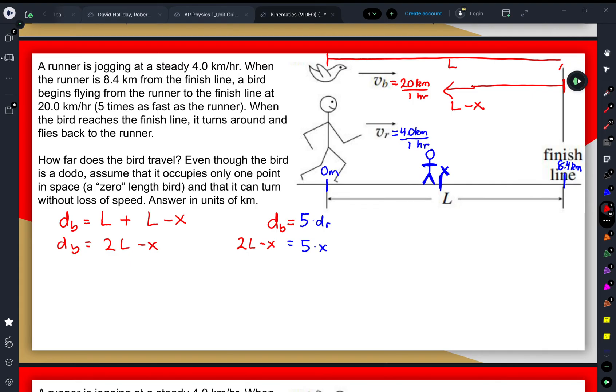So two times the length is equal to—add the x to both sides—six x. So the distance that the runner got to would have been two sixths or one third the total length.